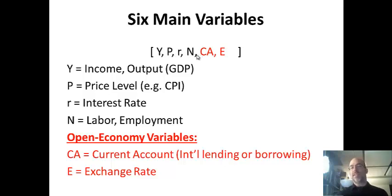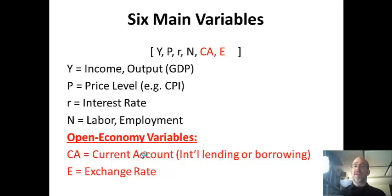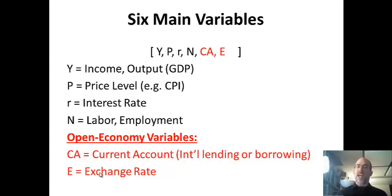We'll lay out the variables separately and then do them as a system. In the open economy — an economy open to trade and capital flows — you can have the current account, which is savings minus investment, basically international lending or borrowing. You can determine what drives the size of the current account; for example, the United States has a current account deficit, and different policies can cause that deficit to grow or shrink. The exchange rate is the price of currency in a two-country context, determined in a model using interest rate parity — I usually save that for international finance.